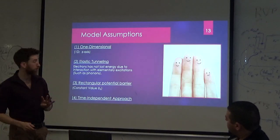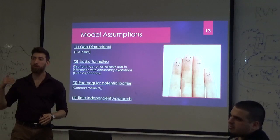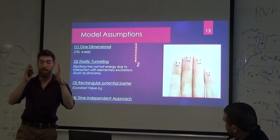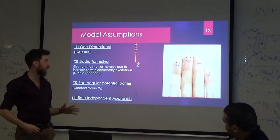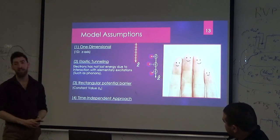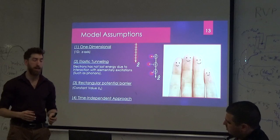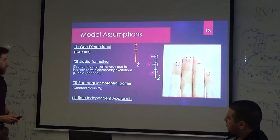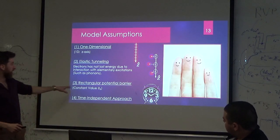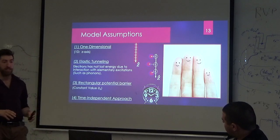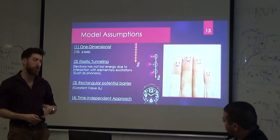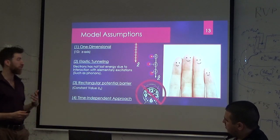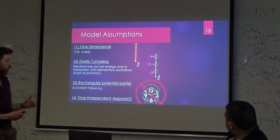There are basically four assumptions we make. First, we talk about a one-dimensional problem — only on the Z axis — starting with the tip, the gap, and then the sample. The second assumption is elastic tunneling, which means we don't have dissipation of energy during tunneling — no phonons in the crystal. The third assumption is a rectangular potential barrier for simplicity, so our barrier is just a constant. And the fourth is a time-independent approach, meaning we don't have changes in time.